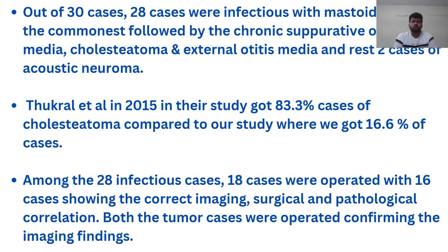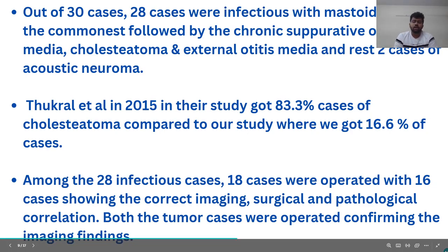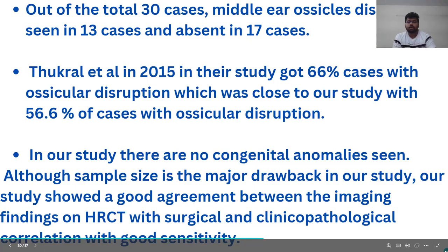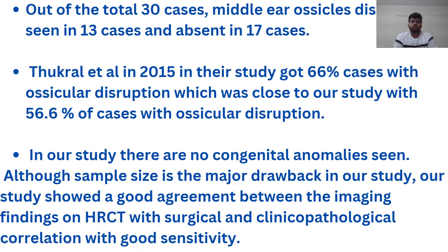Thukal et al. in 2015 reported 83.3% cases of cholesteatoma compared to our study where we found only 16.6%. Out of 30 cases, 18 were operated, with 16 showing correct imaging, surgical, and pathological correlation. Both tumor cases were operated, confirming our imaging findings. Middle ear ossicle disruption was seen in 13 cases. Thukal et al. reported 66% ossicular chain disruption, which was close to our study's 56.6%. No congenital anomalies were seen. Although sample size is a major drawback, our study showed good agreement between HRCT imaging findings and surgical and clinical pathological correlations with good sensitivity.